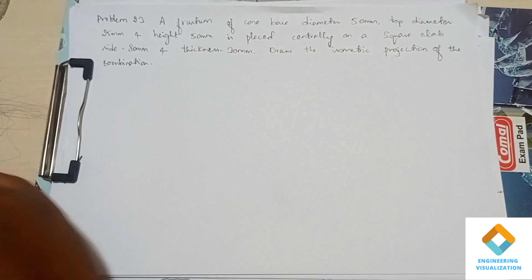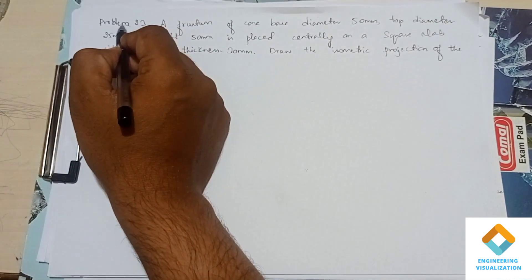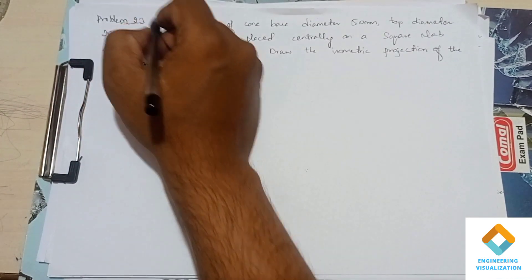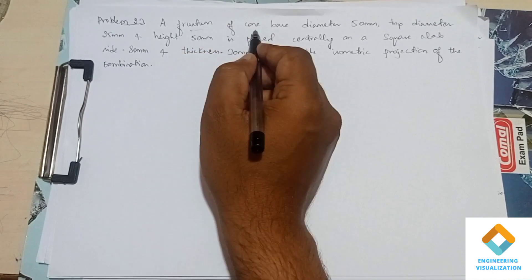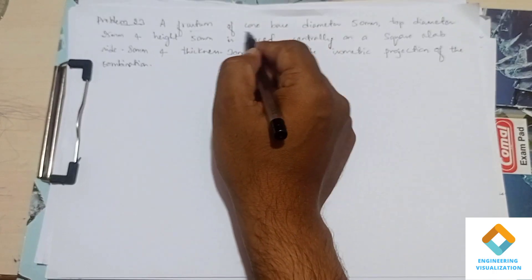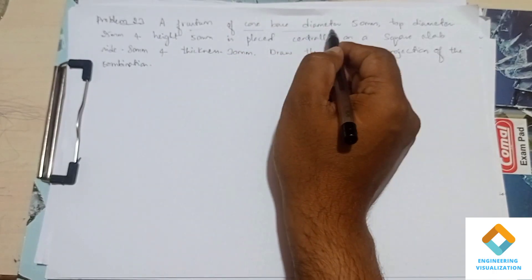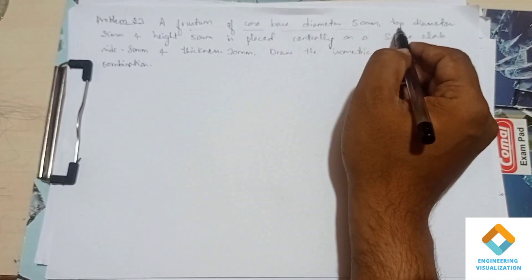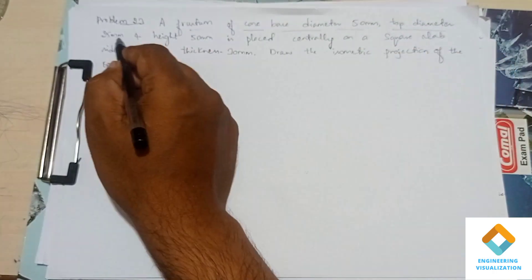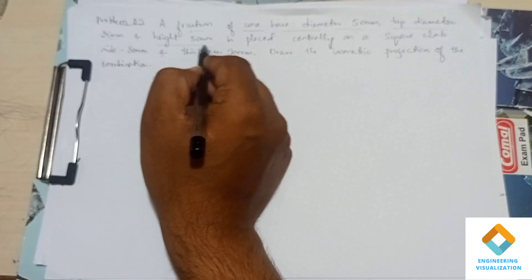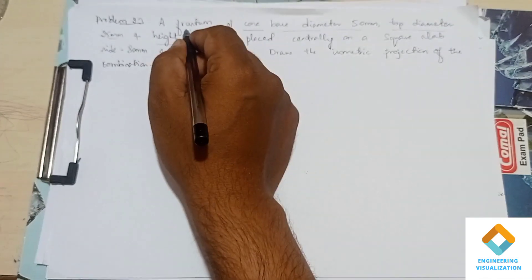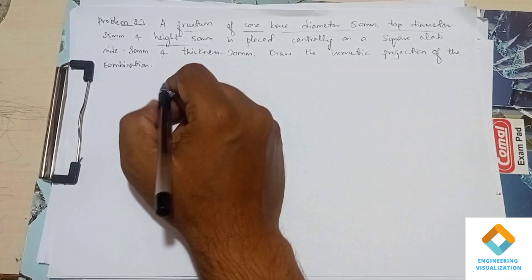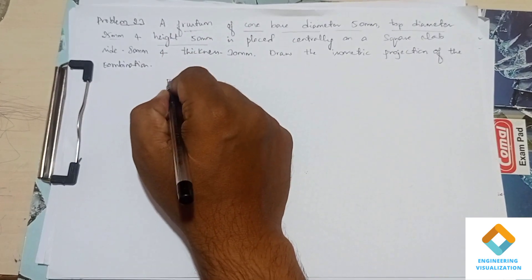Welcome to the Engineering Visualization channel. Problem number 23 from the CAD Solution Book: a frustum of cone with top diameter 25mm, base diameter 50mm, and height 50mm is placed centrally on a square slab.